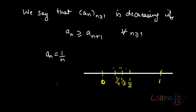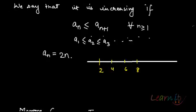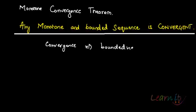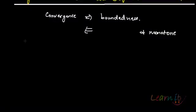There is something very interesting about monotone and bounded sequences, and that is what we learn in the Monotone Convergence Theorem. The theorem says that any monotone and bounded sequence is convergent. This is essentially the converse of the theorem that says convergence implies boundedness. So if a sequence is both bounded and monotone, it is convergent.